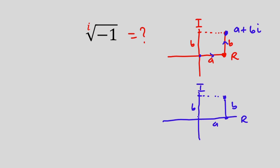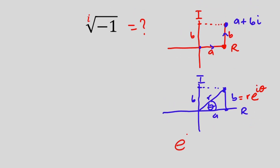Now the distance from this point to this point is going to be b. Let's assume that the distance from the origin all the way to this point is r. Then the angle over here — let's call it theta. What it means is that b is going to be r times e to the power i theta. Then we have to make use of Euler's formula, which is: e to the power i theta is equal to cos theta plus i sine theta.